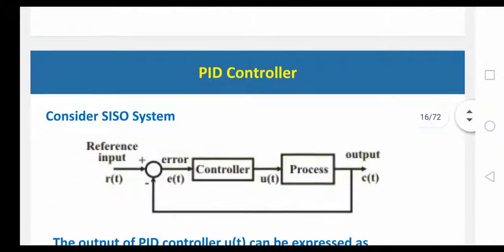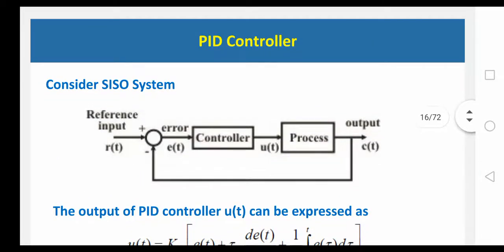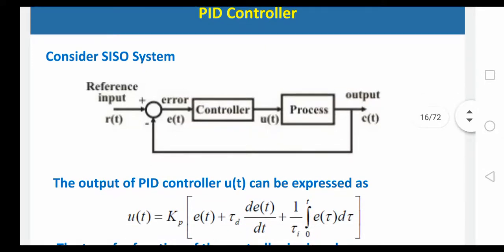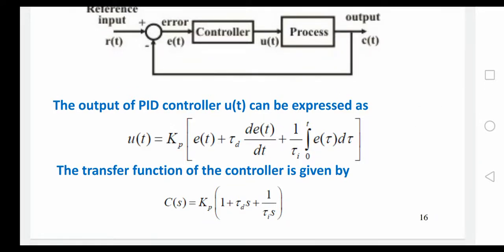Now we are having different types of controllers — which controllers we are going to use. Here I am going to discuss about a PID controller. PID controller is nothing but proportional, integral and derivative controller. Always we are having a reference input R(t), error E(t), controller and process or plant. The output of PID controller will be expressed as: proportional term Kp·E(t), plus derivative term Td·dE(t)/dt, plus integral term (1/Ti)·∫E(t)dt. Here Td is the derivative constant and Ti is the integral constant. The transfer function of a PID controller is: C(s) = Kp[1 + Td·s + 1/(Ti·s)].